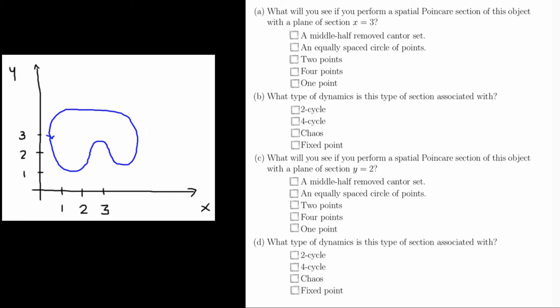For Part A, we want to take a plane of section at x equals 3, so here. If we do this, the Poincaré section will have two points on it, here and here. So the answer to Part A is two points. If you take a spatial Poincaré section and you have two points on it, this type of section is associated with a two cycle. So this is the answer to Part B.